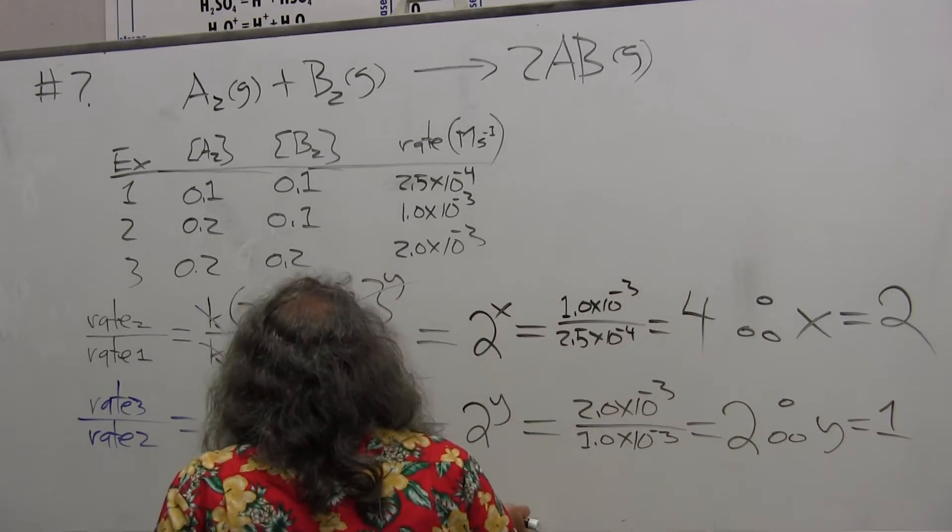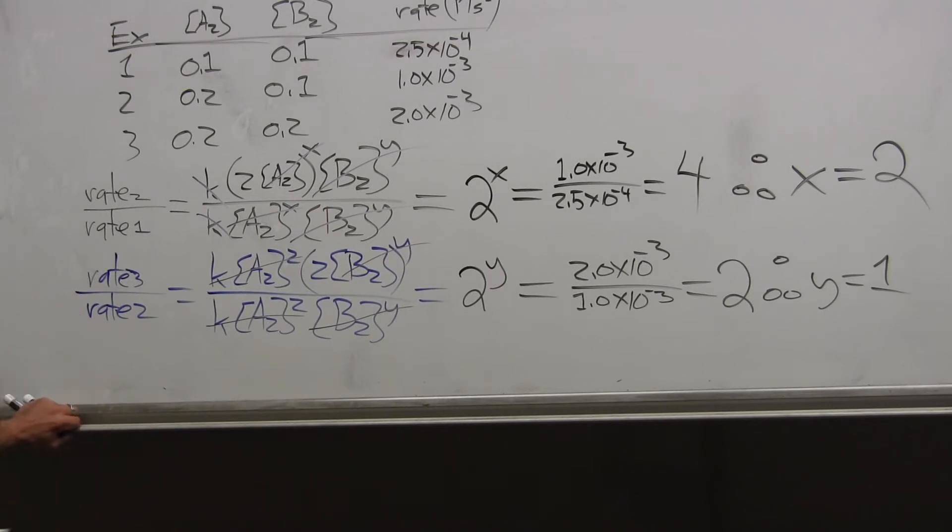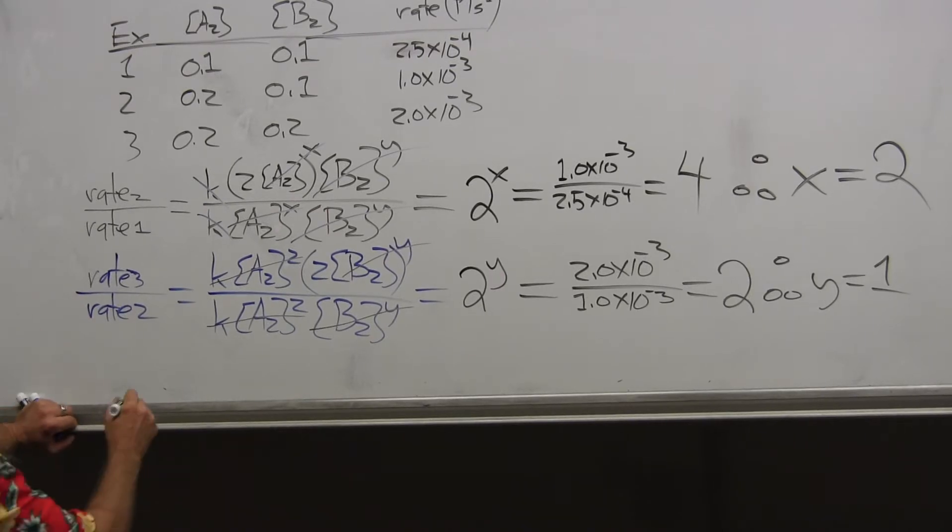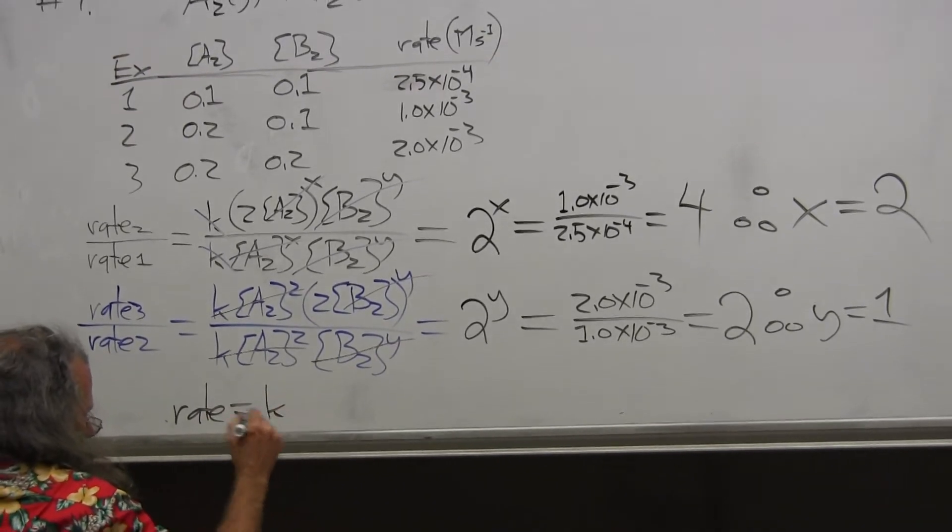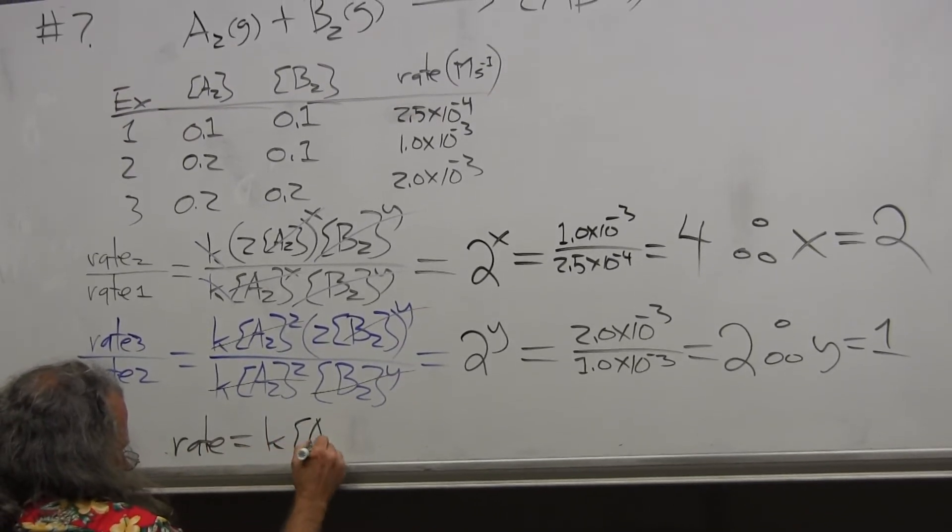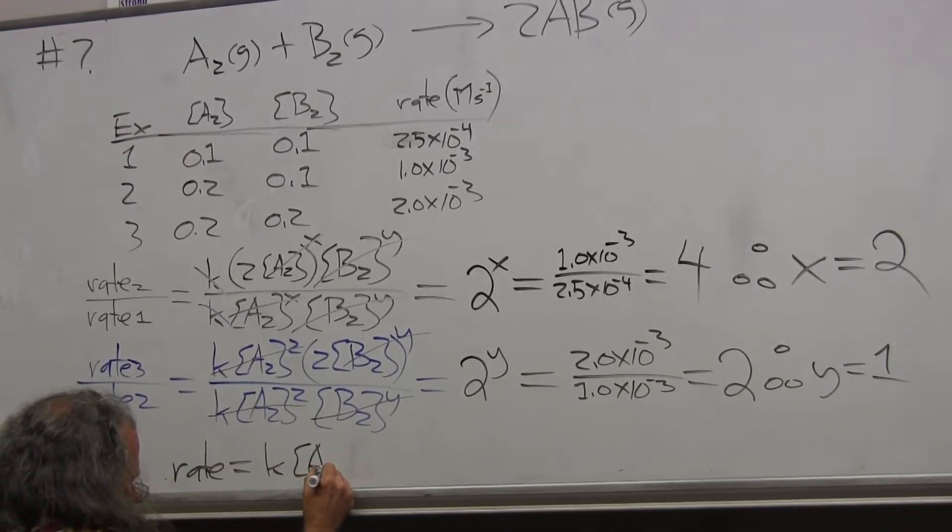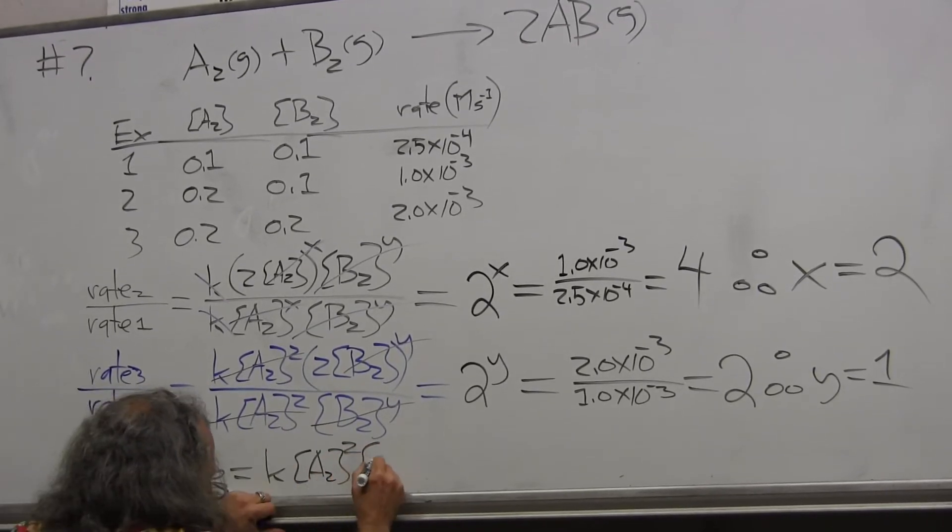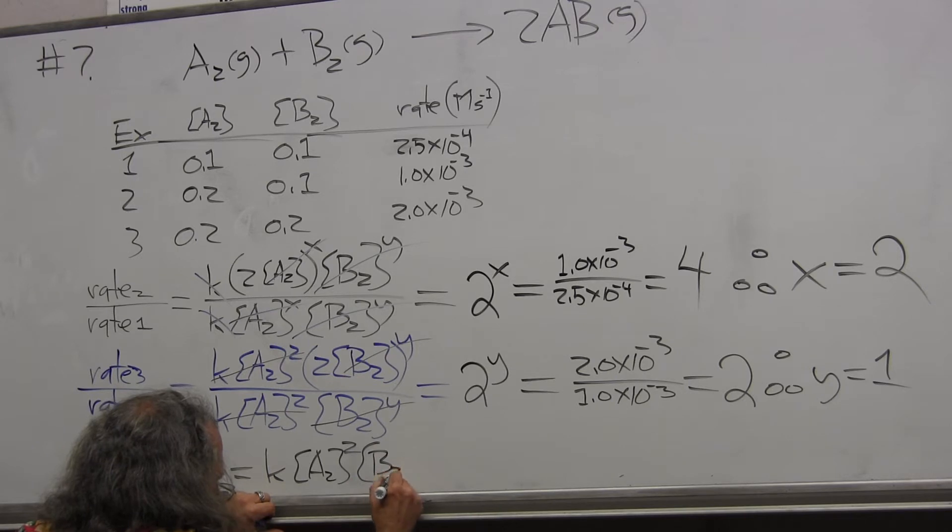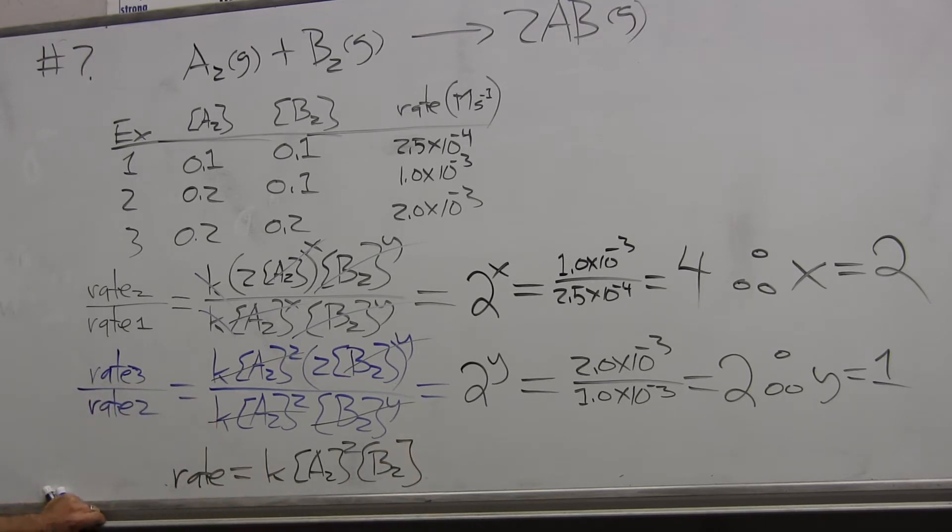And at last, we can write the rate law, which was what this question was about. The rate is equal to some sort of a constant times the concentration of A squared, second order in A, and first order in B. What's the overall order? Third order, third order overall. So that answers part A to this problem.